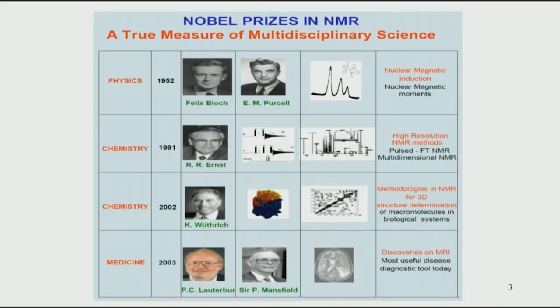A major use of NMR is in imaging. The Nobel prize in 2003 was awarded to Peter Mansfield and Paul Lauterbur for similar contributions to MRI. MRI basically involves imaging of the whole body of a human or animal and capturing the anatomy of the human system. This illustrates the huge range of NMR applications, right from physics to chemistry, biology, and medical imaging.